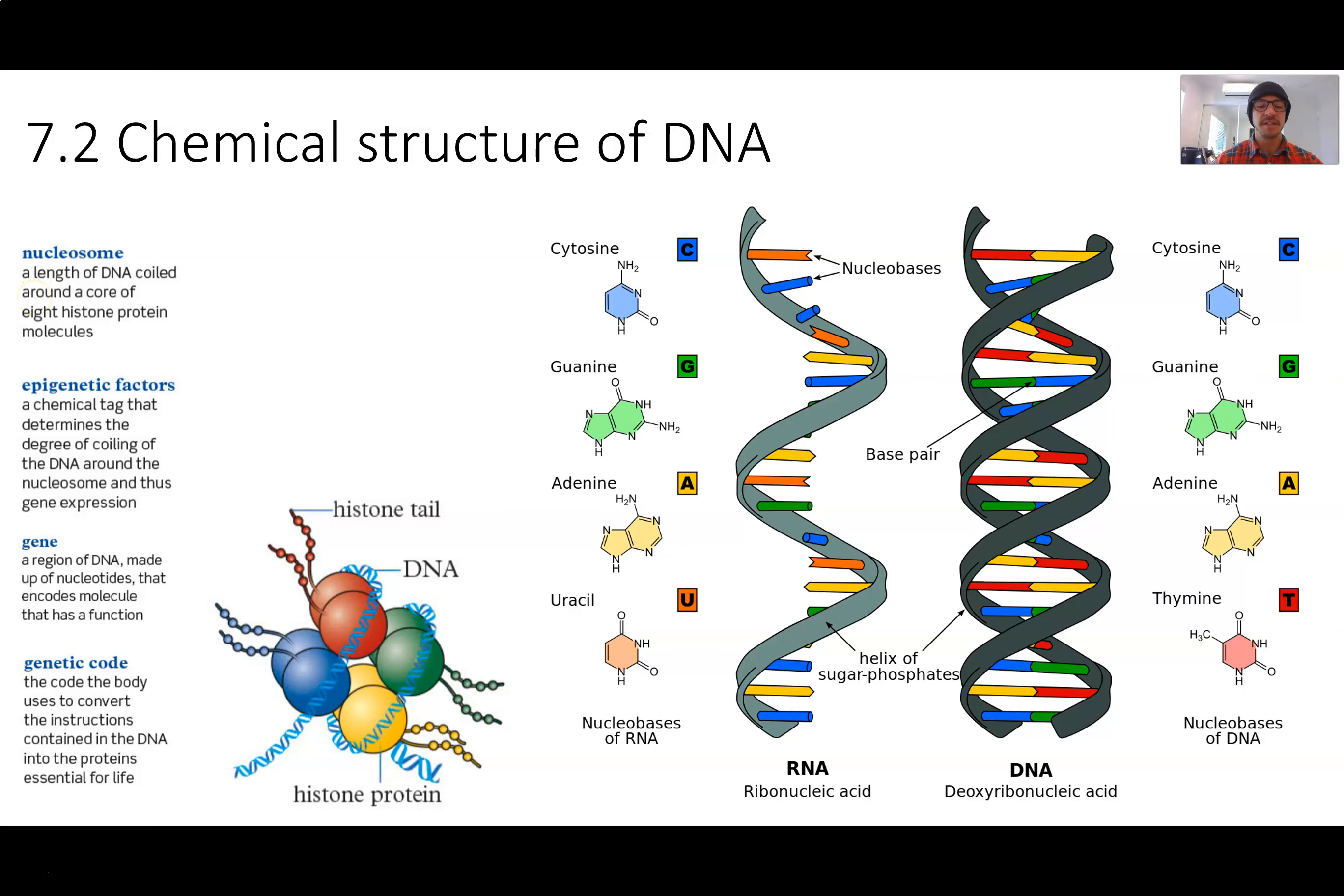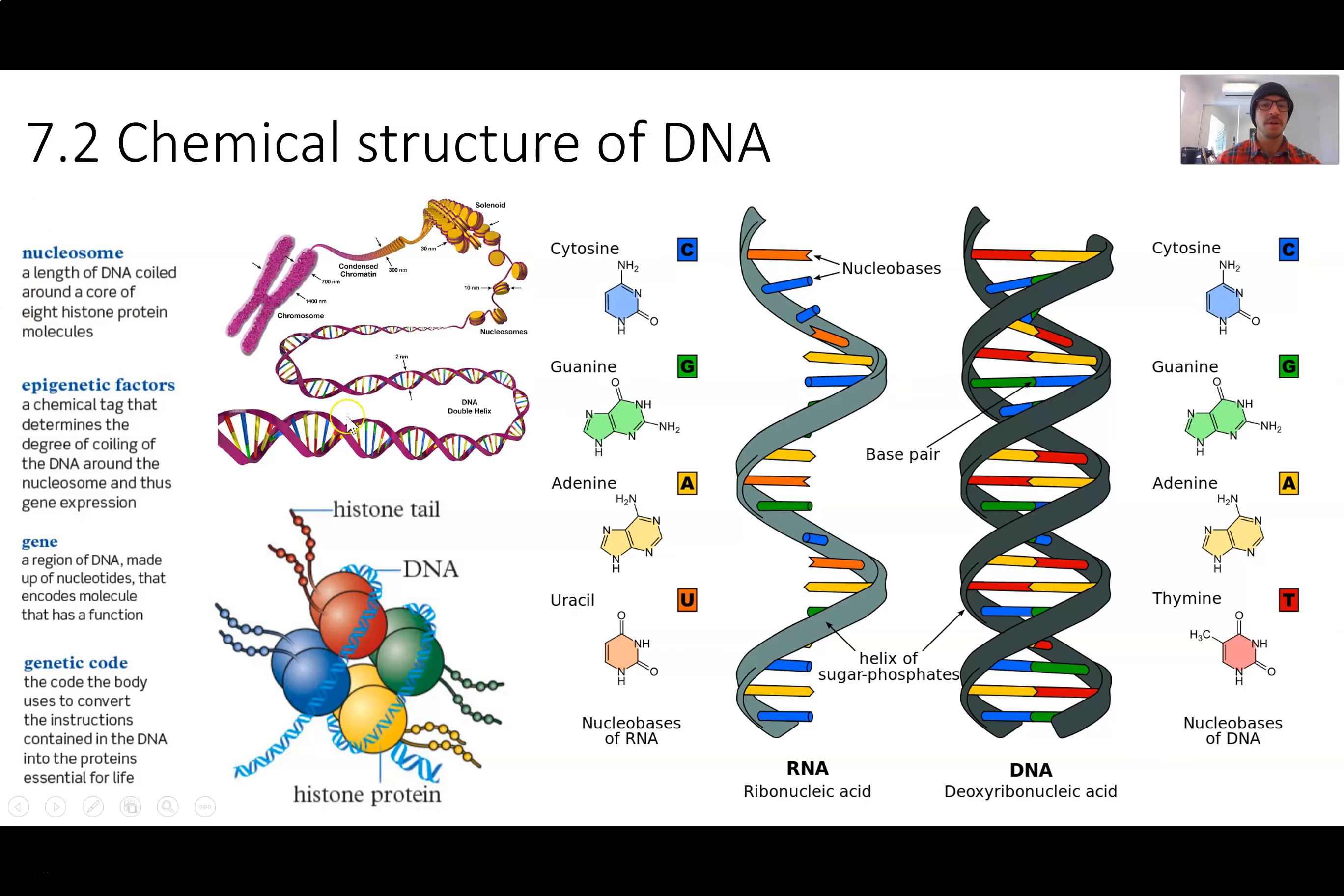Before a cell can divide, it needs to replicate its DNA. At this point, this is where there is double the amount of length of DNA in a cell. So these coils become even more closely tied together, and this image shows how DNA coils up to form these nucleosomes. Those nucleosomes then bundle up.